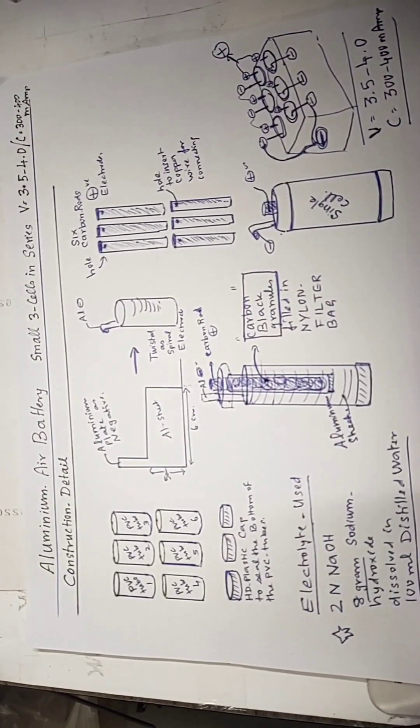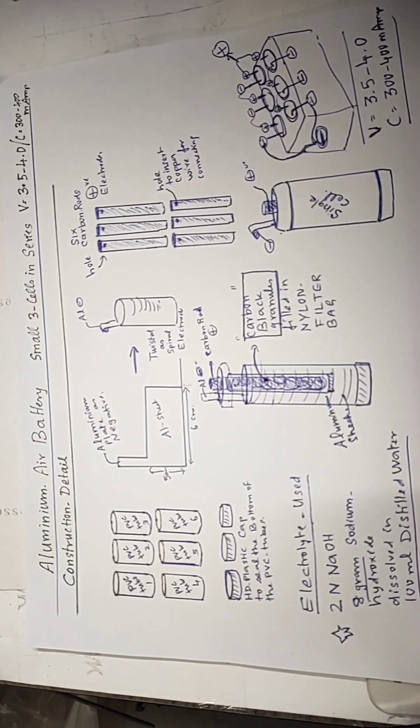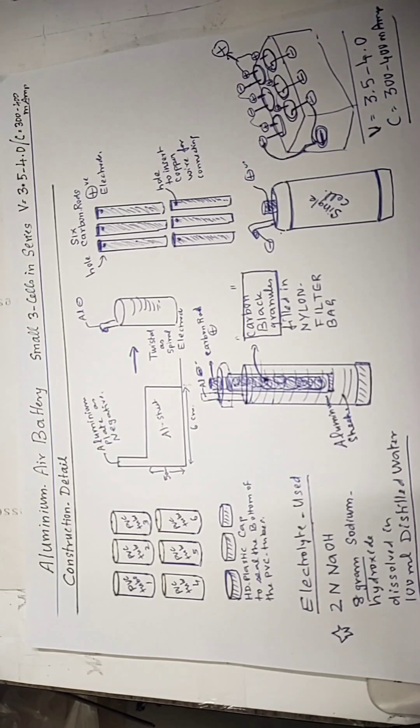This will be our construction detail with regard to aluminum air battery. Small double A size, 3 cells in series connection. It will give 3.5 to 4 volt continuous and the current around 300 to 400 milliampere.